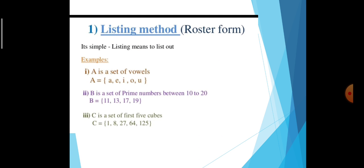See a few more examples of roaster form. Roaster form is also called the listing method — it is simple. Listing means to list out. Example: A is a set of vowels. A = {A, E, I, O, U} — this is roaster form. Next, B is the set of prime numbers between 10 and 20. Prime numbers between 10 and 20 are 11, 13, 17, 19 — roaster form. Next, C is a set of the first 5 cubes: 1³=1, 2³=8, 3³=27, 4³=64, 5³=125 — listing method.